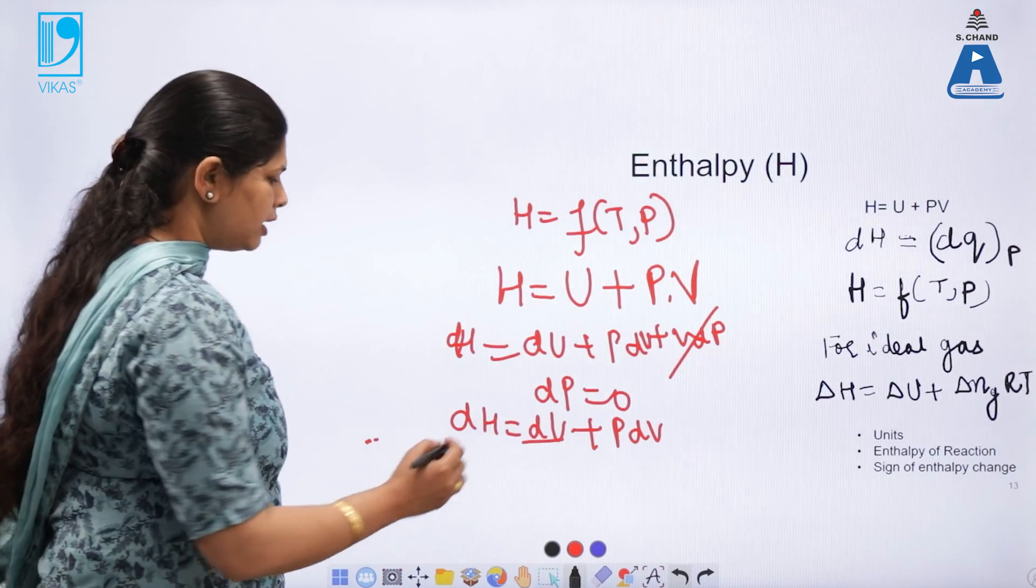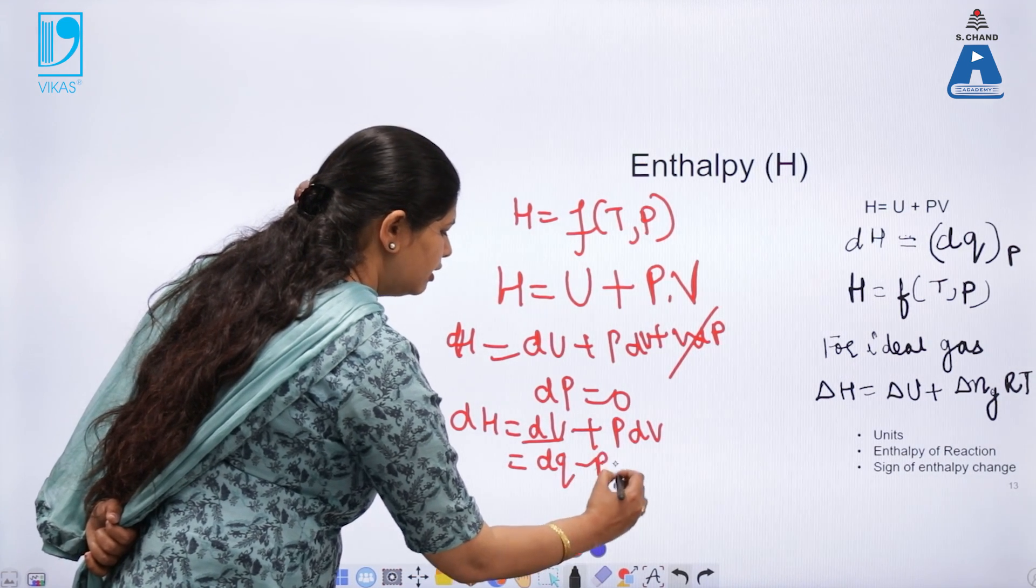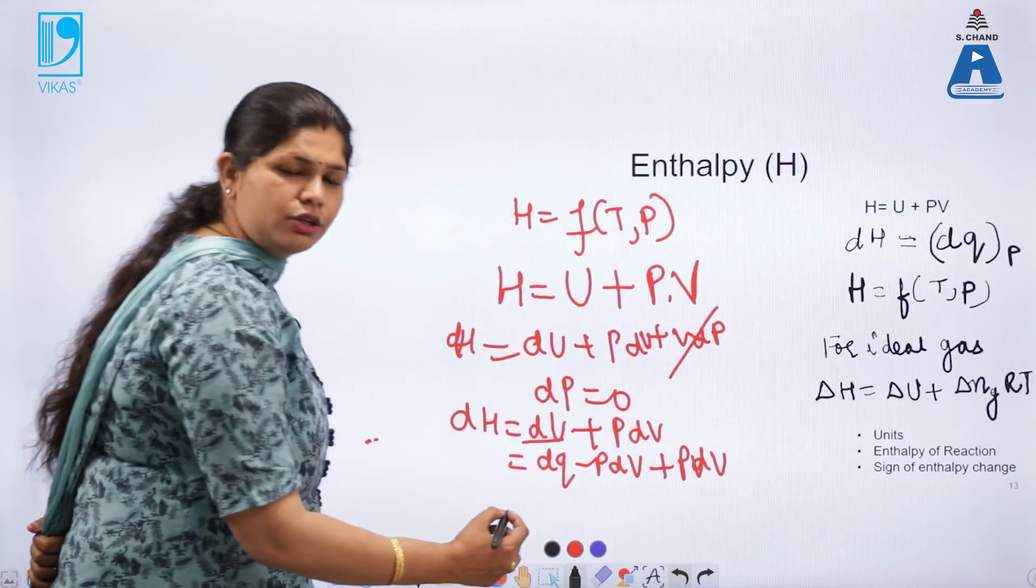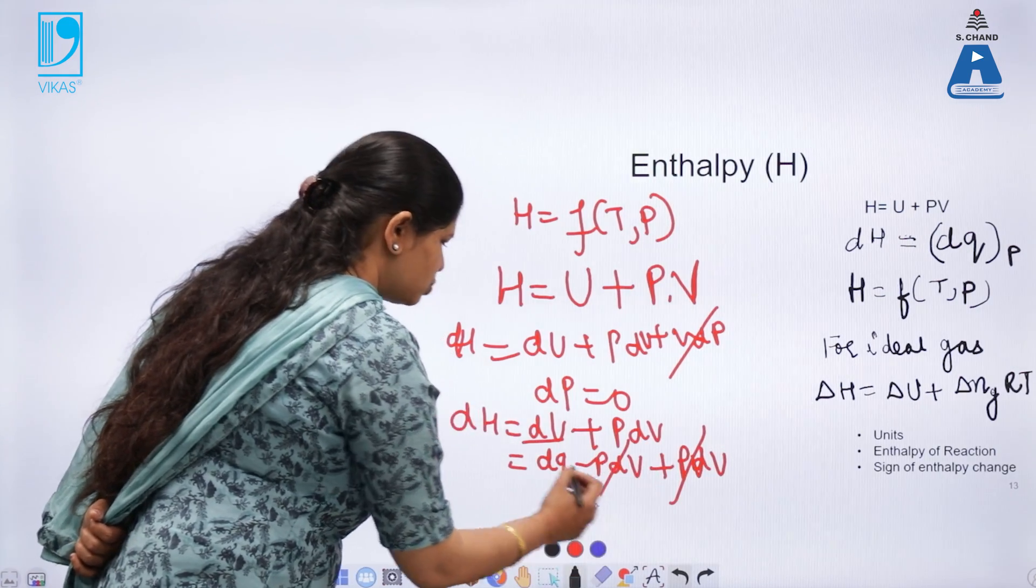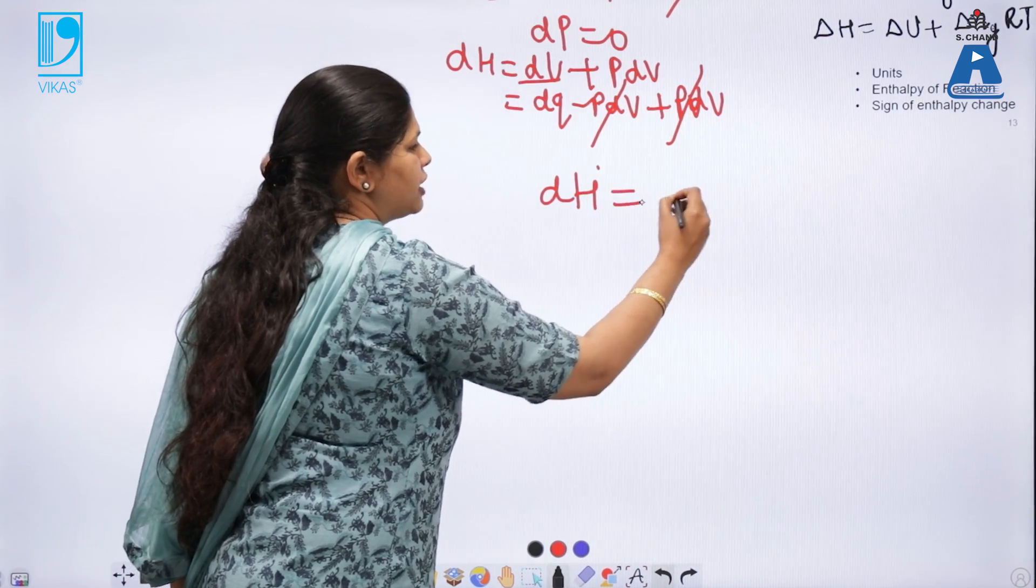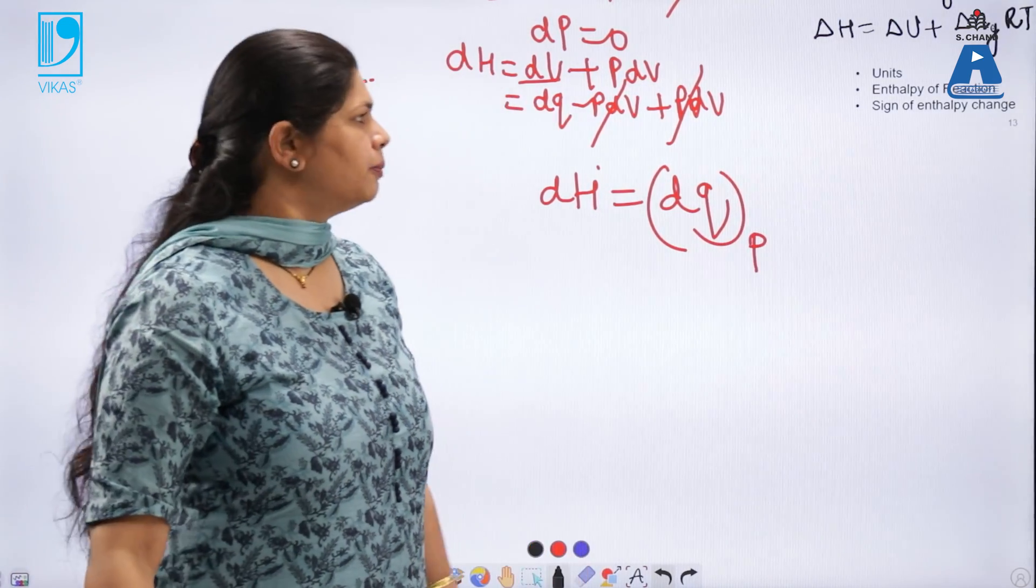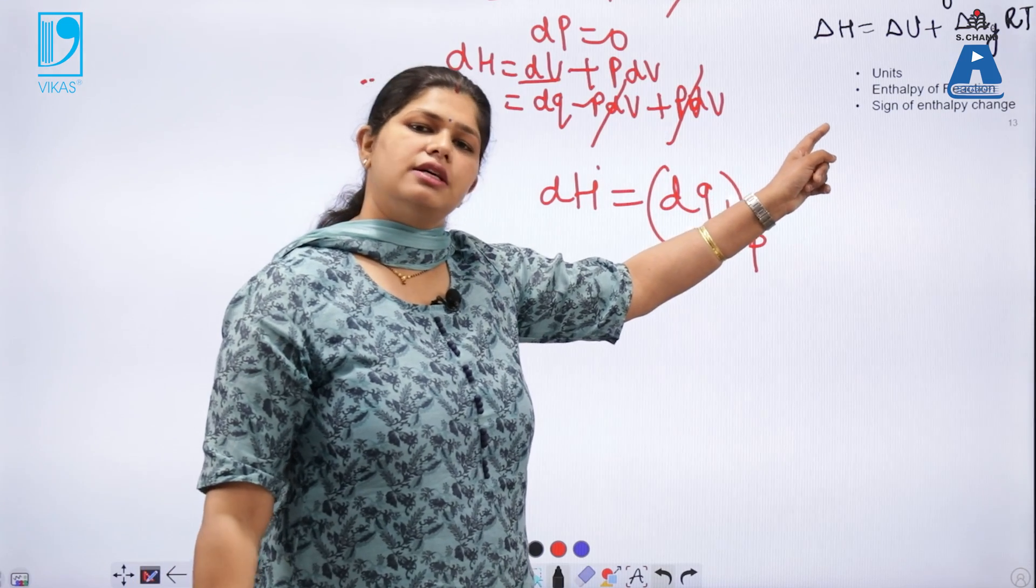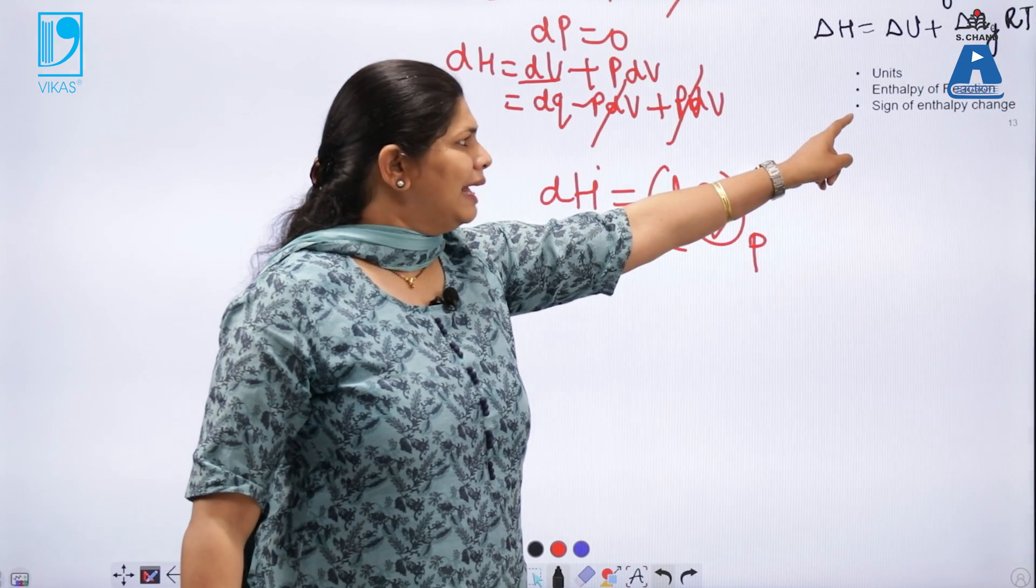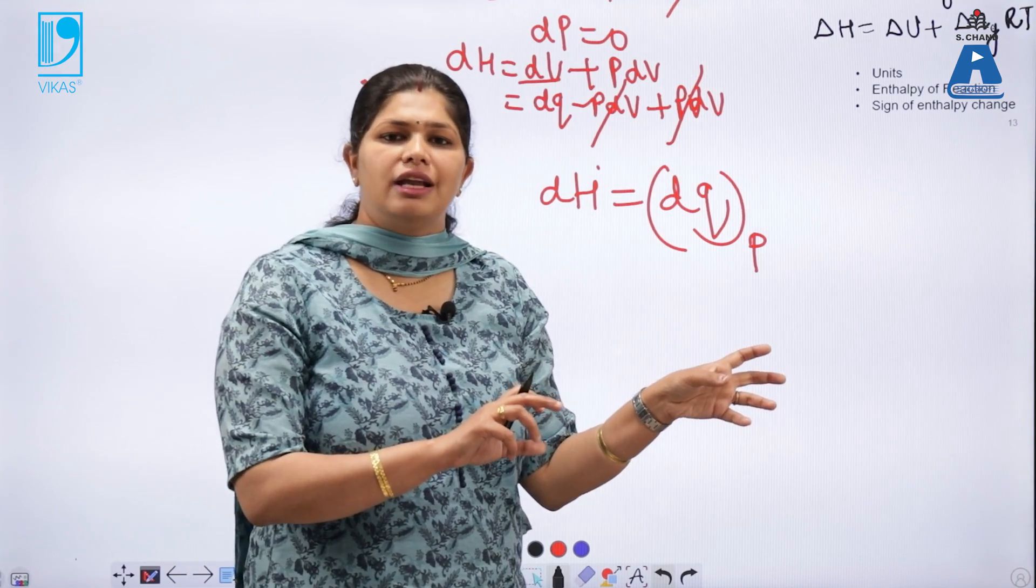Now, according to first law of thermodynamics, dU can be represented as dQ minus PdV. So, and if I substitute it in the above expression, it will be this. So, on cancelling these two, I will have dH at constant pressure becomes dQ that is heat content of the system at constant pressure. The units of enthalpy is same as internal energy which is joules. So, enthalpy of reaction is summation of the enthalpies of the product minus summation of enthalpies of reactants.